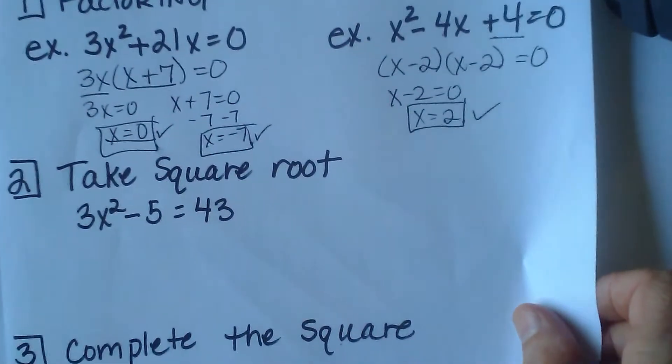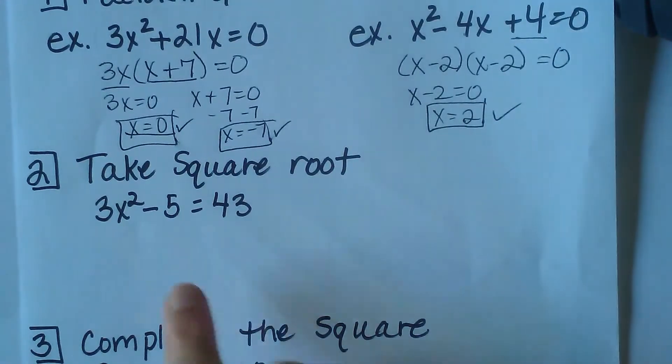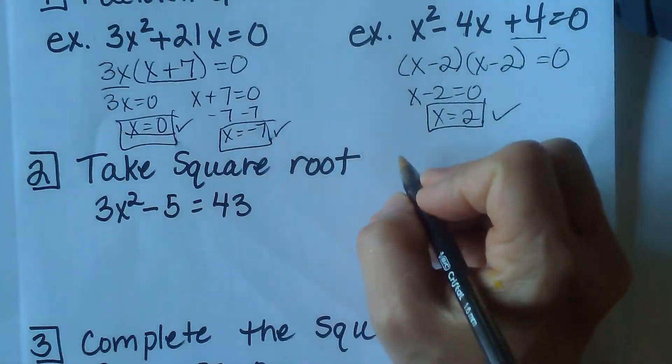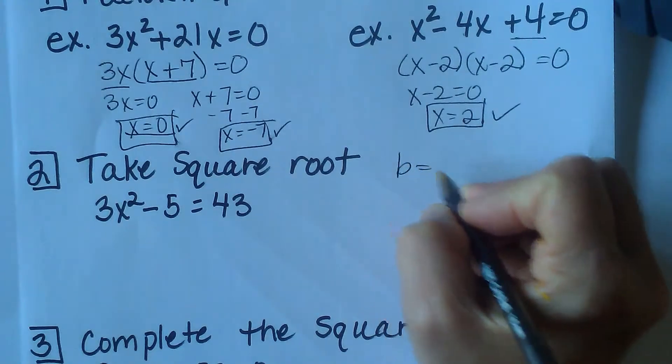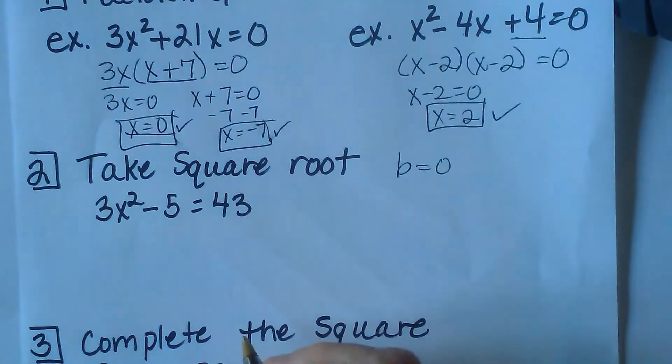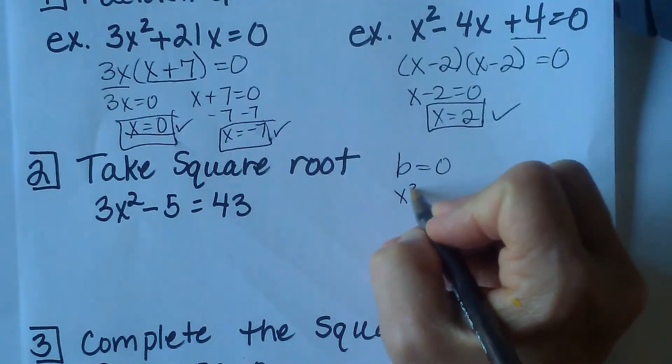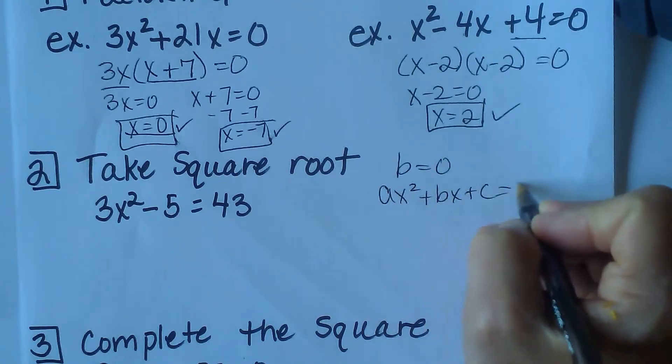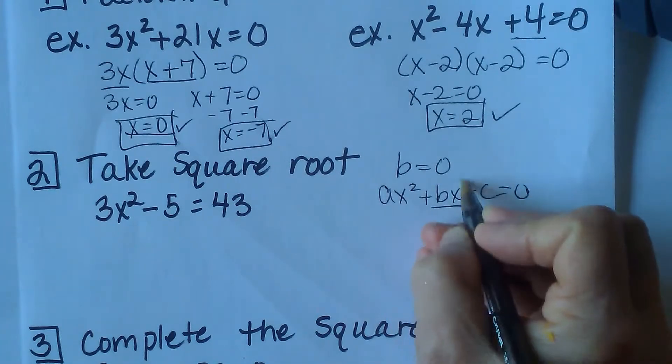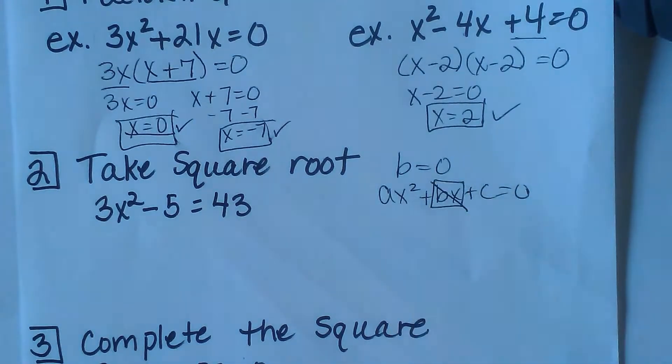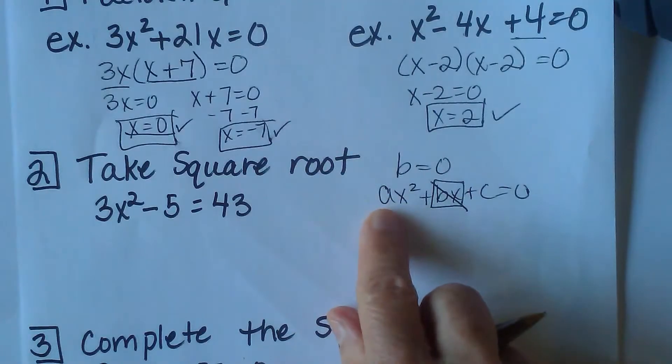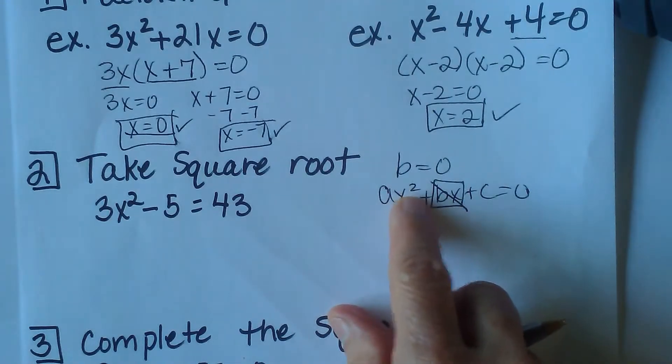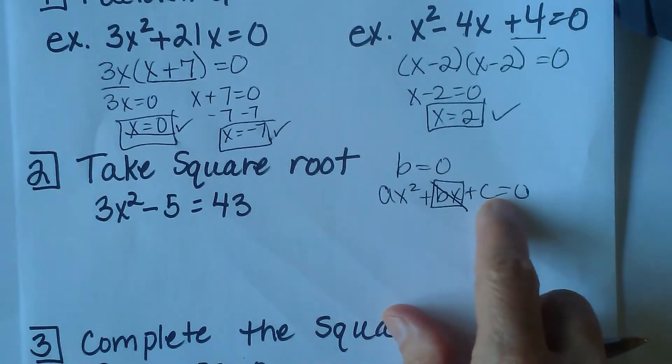Now let's review taking the square root. This method works best when b is equal to zero. What do I mean by that? When you have a quadratic, you have ax squared plus bx plus c, that's standard form. When b is equal to zero, that means this term does not exist. We only have the quadratic term or x squared, and we have c or a constant.